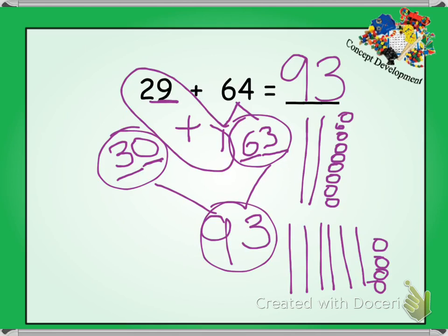So now I'm going to count all my tens first and then my ones. 10, 20, 30, 40, 50, 60, 70, 80, 90. 91, 92, 93, 94, 96, 97, 98, 99.